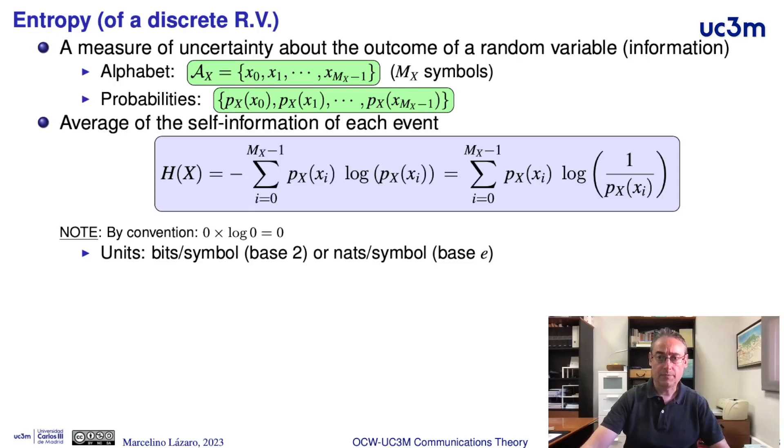Because of this, we are going to introduce and analyze this function. The entropy of a random variable quantifies the uncertainty about the outcome of a random variable.